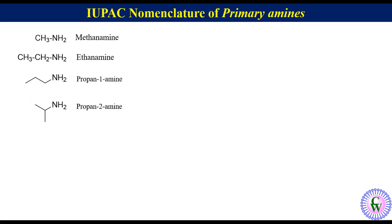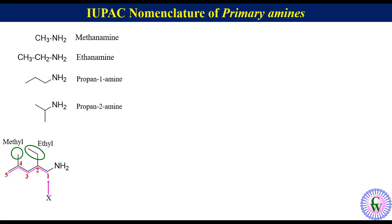Another example: here there is a 5-carbon chain that will be treated as the parent chain. Numbering will be 1, 2, 3, 4, and 5. There are 2 substituents: an ethyl at C2 and a methyl at C4. The position of the amine group, X, is equal to 1. So the IUPAC name will be 2-ethyl-4-methyl-pentane-1-amine.